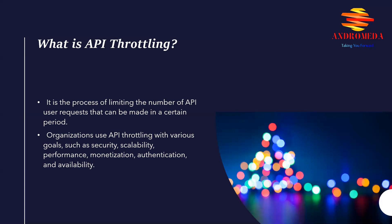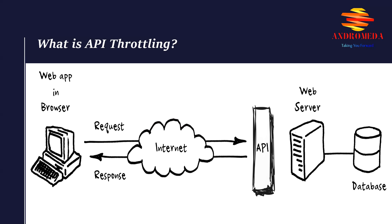Let's see a real life example. Assume that a person is searching for a flight through an online travel agency website. The website collects information from the user including origin, destination, and date of travel. Then it uses APIs to fetch the flight information from the global distribution system.